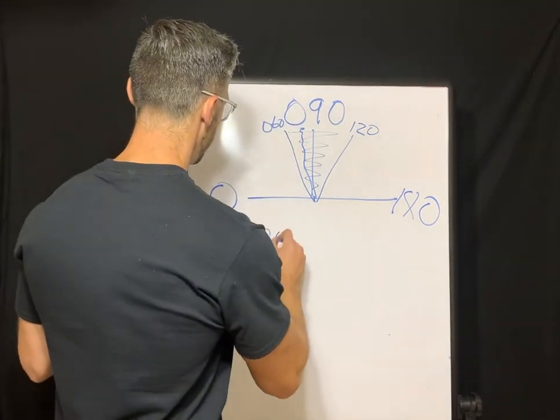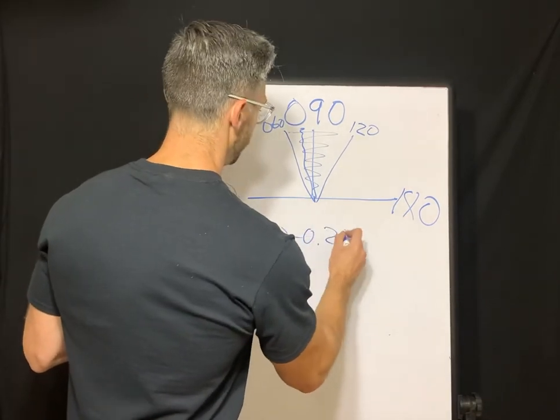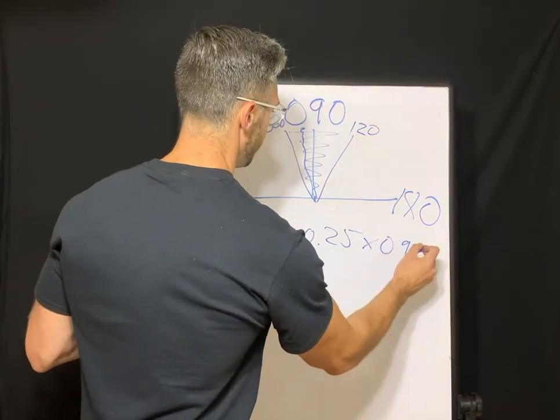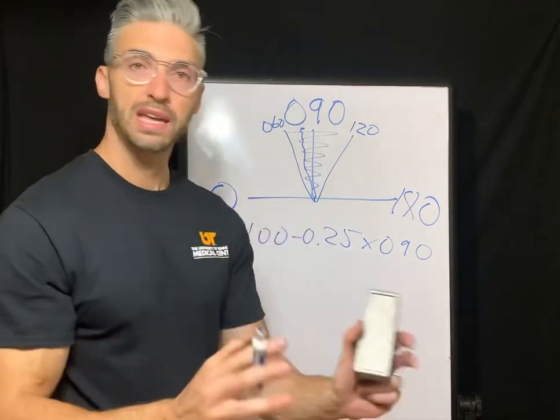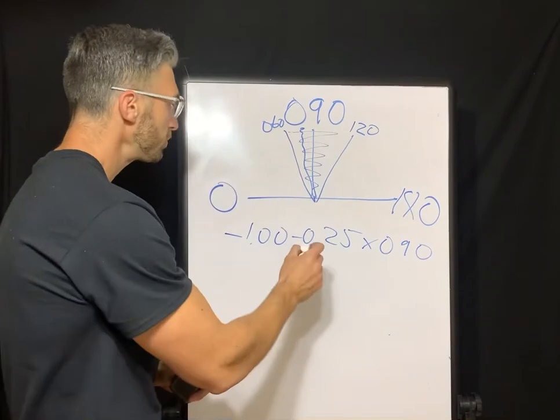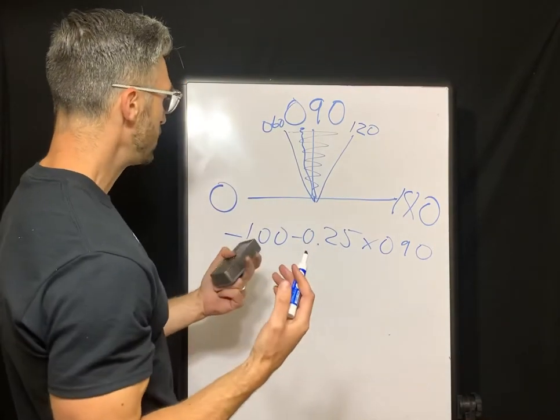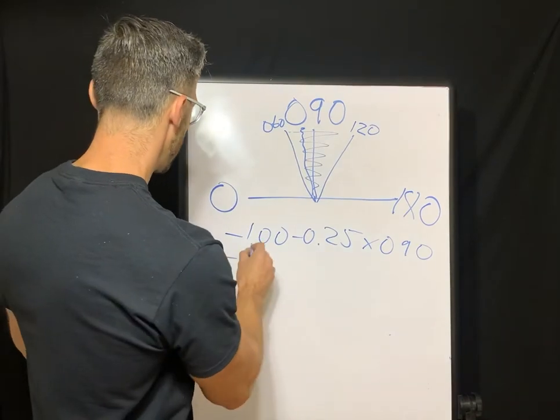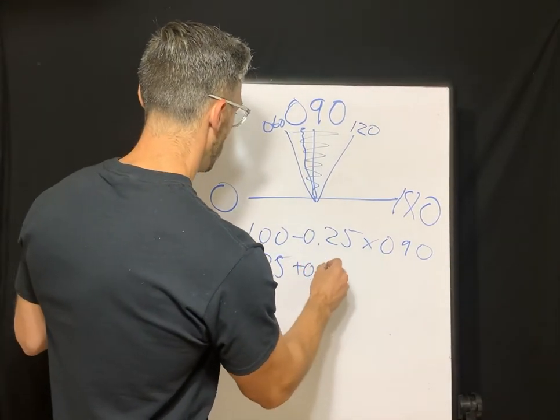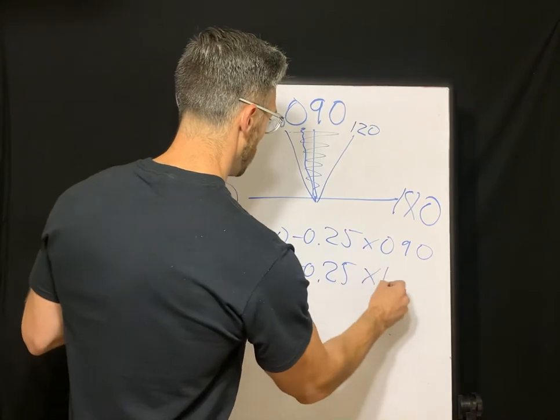All right, so that's against the rule astigmatism. Against the rule astigmatism is a little harder to work with than with the rule astigmatism. But the math is exactly the same. So what you want to know is that the prescriptions are going to be around the 90 degree axis, working along the same principles as what we just covered for with the rule astigmatism. So negative one, negative a quarter, axis 90.